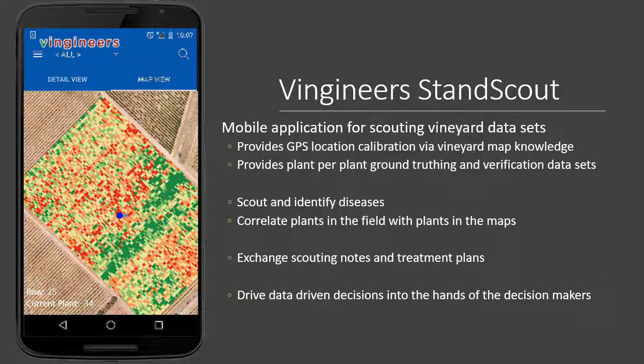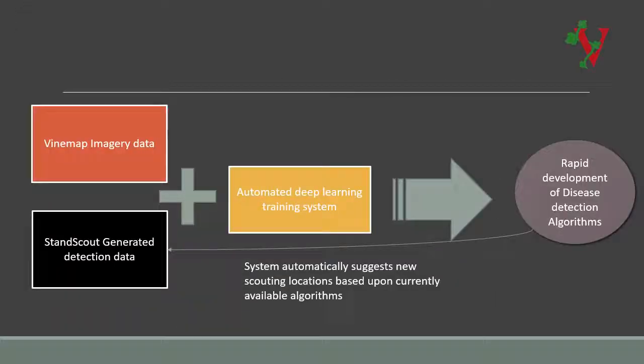Vingineers' mobile application allows for direct plant-by-plant notation of ground truth scouting in the field. This means that when issues are detected, they can be automatically loaded into the field database. With high-quality imaging and structured ground truth data, this becomes an opportunity to use deep learning algorithms to crowdsource the detection of different diseases across regions. It also becomes a platform for research and universities to test, validate, and share their algorithms with the precision viticulture community.